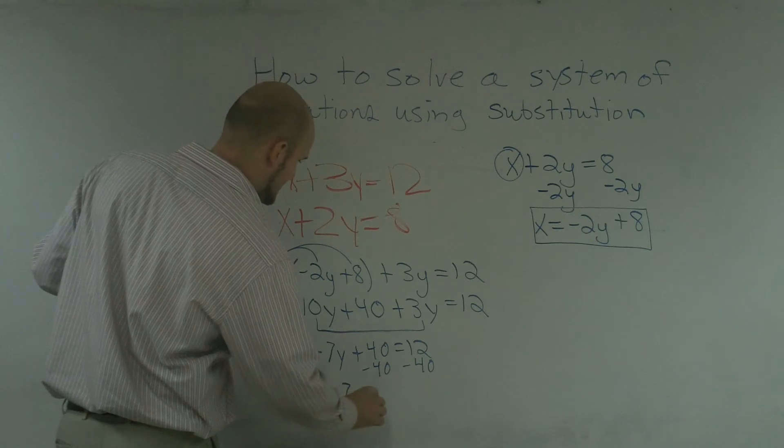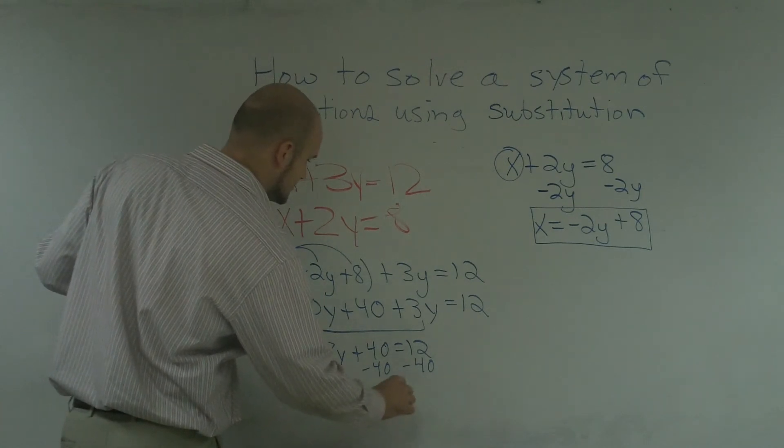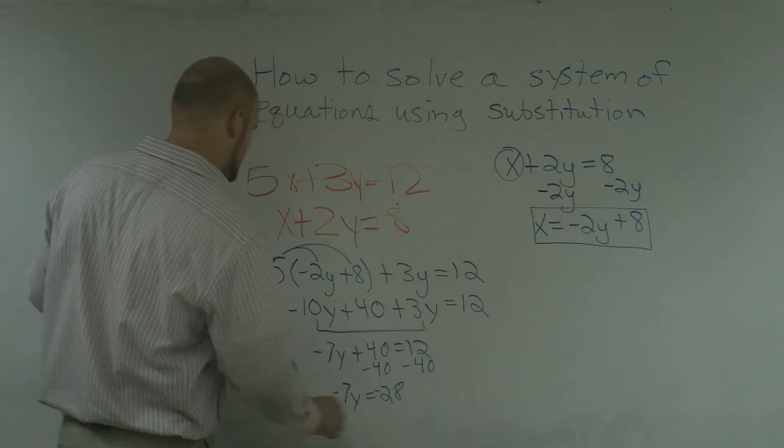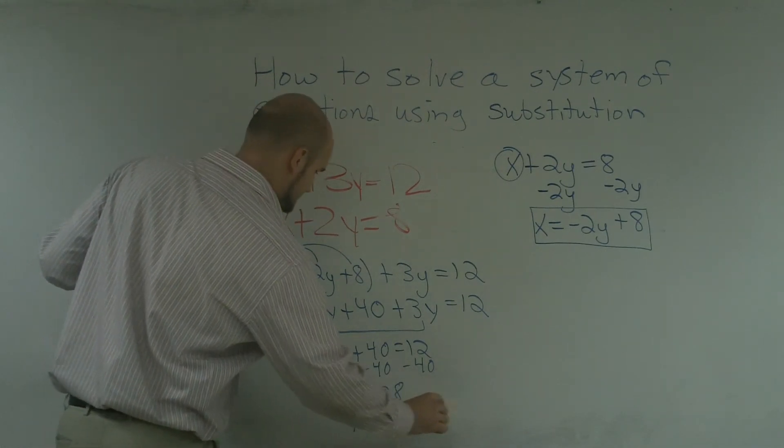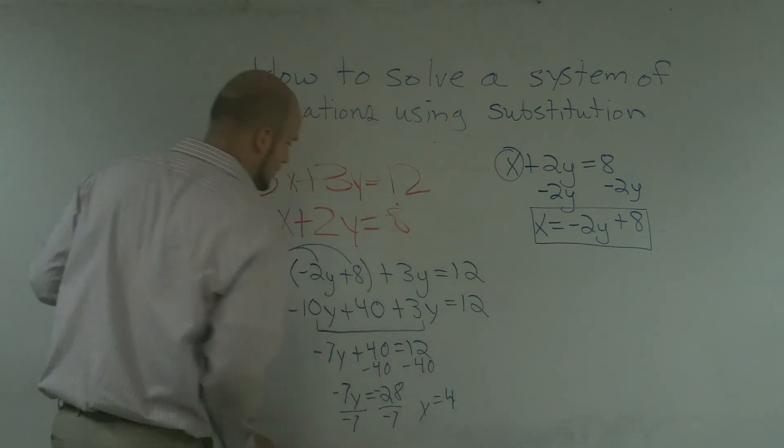Therefore, I get a negative 7y equals a negative 28 divided by negative 7 divided by negative 7, y equals a positive 4.